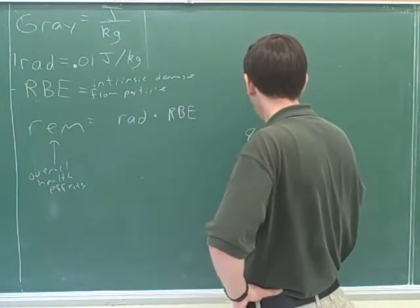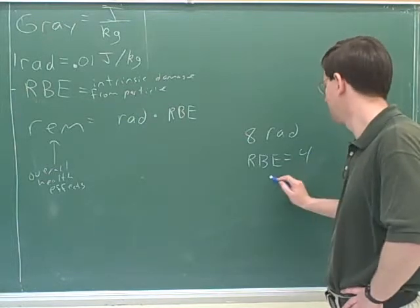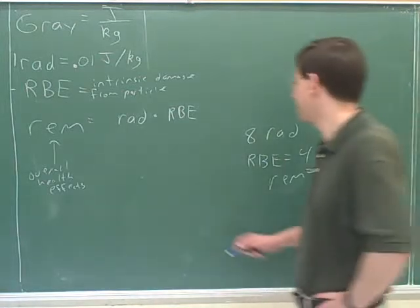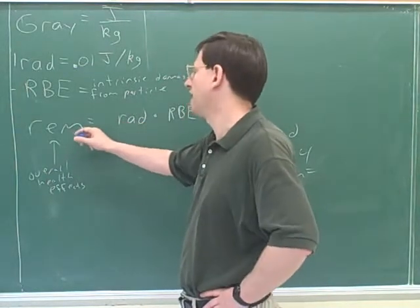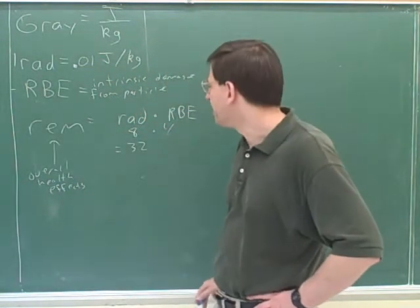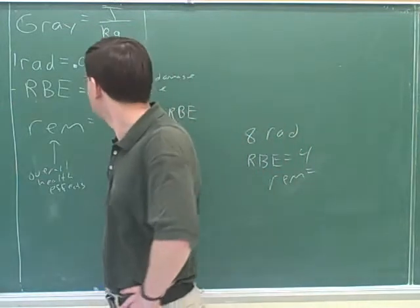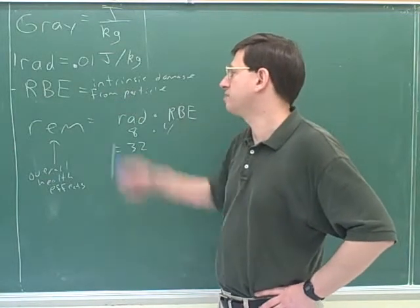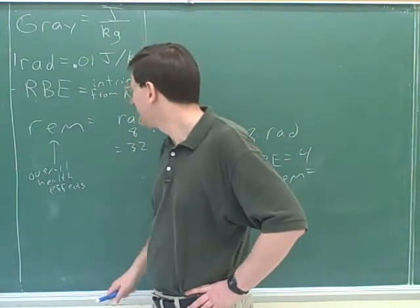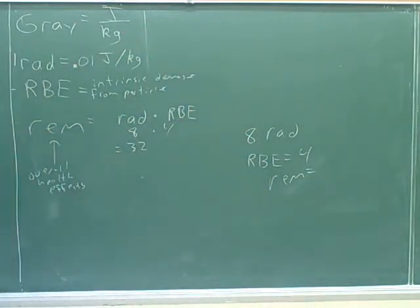So for example, if you're exposed to eight rads with an RBE of four, what would the REM be? 32. Right. So you just do what seems natural here. This means that REM is the number of rads times the number of RBE. So here it would be eight times four, or 32. And you can see this is taking into account both how many joules per kilogram the person is being exposed to and the intrinsic damage that you get from those types of particles. So by the way, if you're going to be hit by radiation, do you want it to be radiation with a large RBE or a small RBE? Small. Yeah, that would be better. And you want a small number of rads. And then the REM tells you the overall health effects. I think REM stands for something like roentgen equivalent measure, which is not very intuitive. But what it means is the overall health effects. REM is telling us the overall health effects.